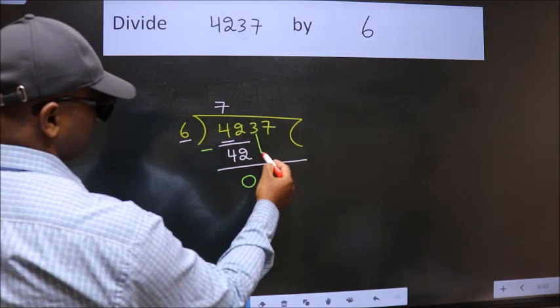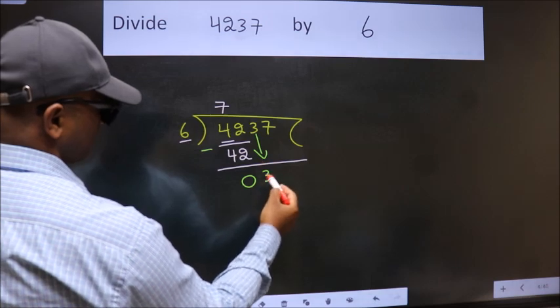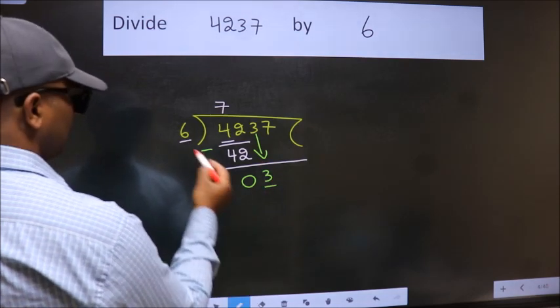After this, bring down the beside number. So, 3 down. Here we have 3, here 6.